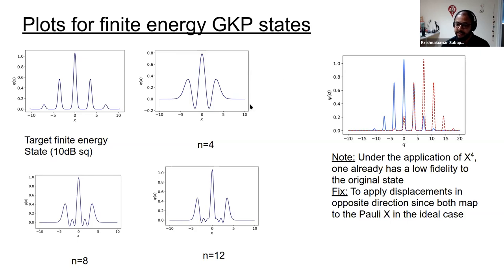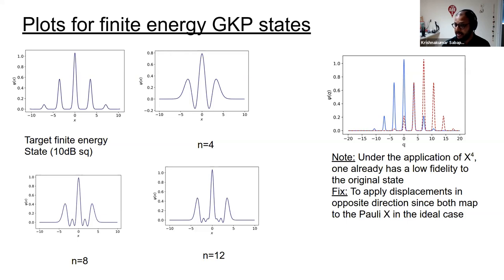One implication of finite energy states: if you take such a state and displace it along the X axis by applying Pauli to the fourth power, the final state and the original are already at low fidelity — even though that Pauli operator should give the identity. A fix for this specific example is to apply displacements in two directions — forward and back. In general, however, the problem is complex and one must think carefully about how finite energy states interact with general computation, including non-orthogonality of codewords and energy dependence of operators that come into play at the compilation stage.